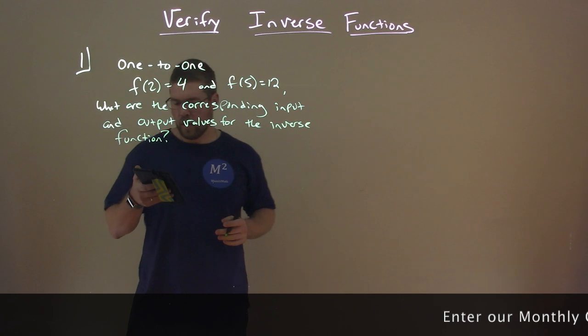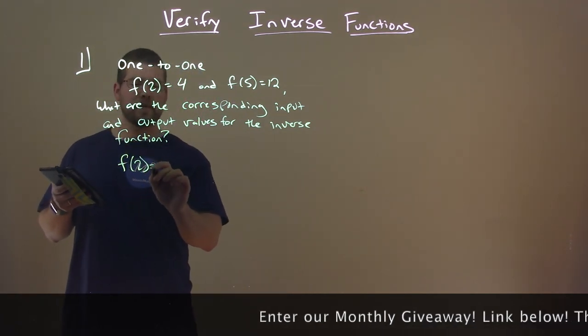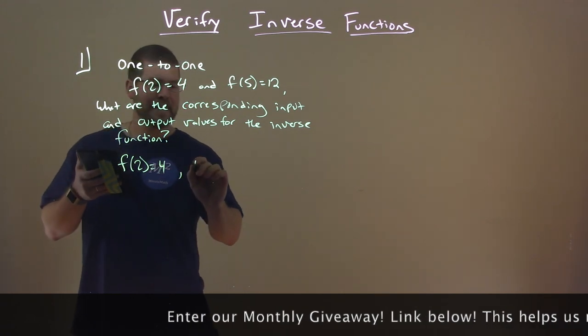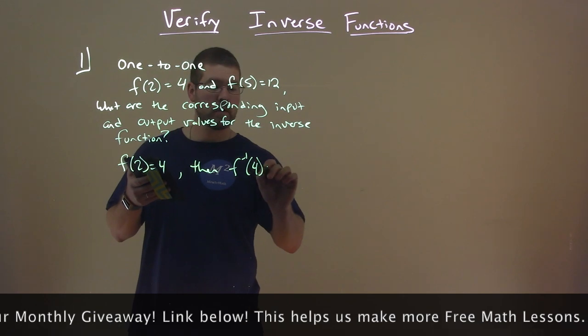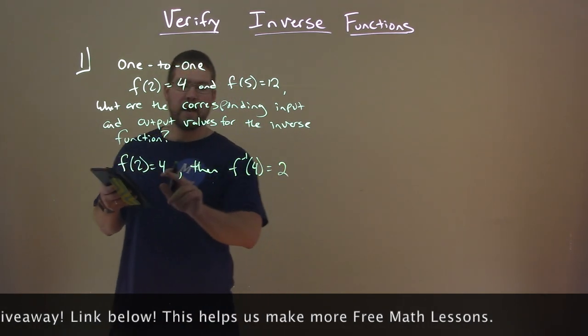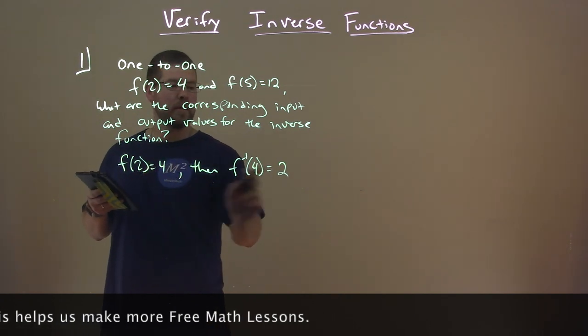Well, they tell us that f of 2 equals 4, so that means our inverse f inverse of 4 must equal 2. The output of our original function becomes the input, and the input becomes the output.